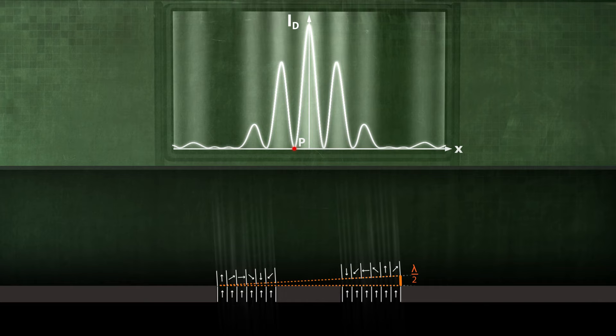At the first minimum, the path difference delta is half a wavelength. The partial waves of the first slit and the partial waves of the second slit exactly eliminate one another.